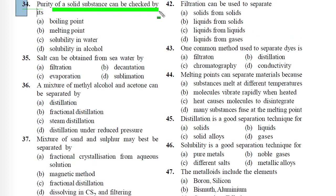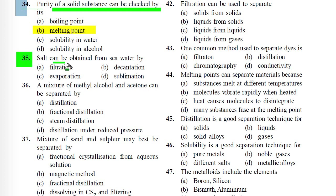Question 34: Purity of a solid substance can be checked by: A) Boiling point, B) Melting point, C) Solubility in water, D) Solubility in alcohol. Correct answer is B) Melting point, because every pure solid has a fixed melting point.